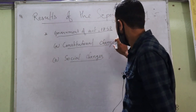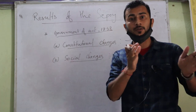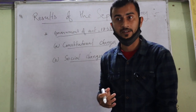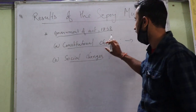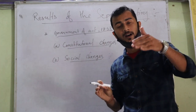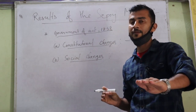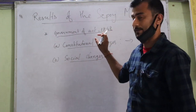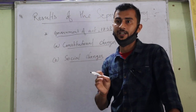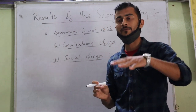Another important constitutional change was the replacement of the Governor General. The Governor General, who had been the East India Company's administrative leader, was now replaced by the Viceroy. Lord Canning was the last Governor General of India at the time of 1857. After this act, when the direct British government started to rule India, Lord Canning also became the first Viceroy of India.